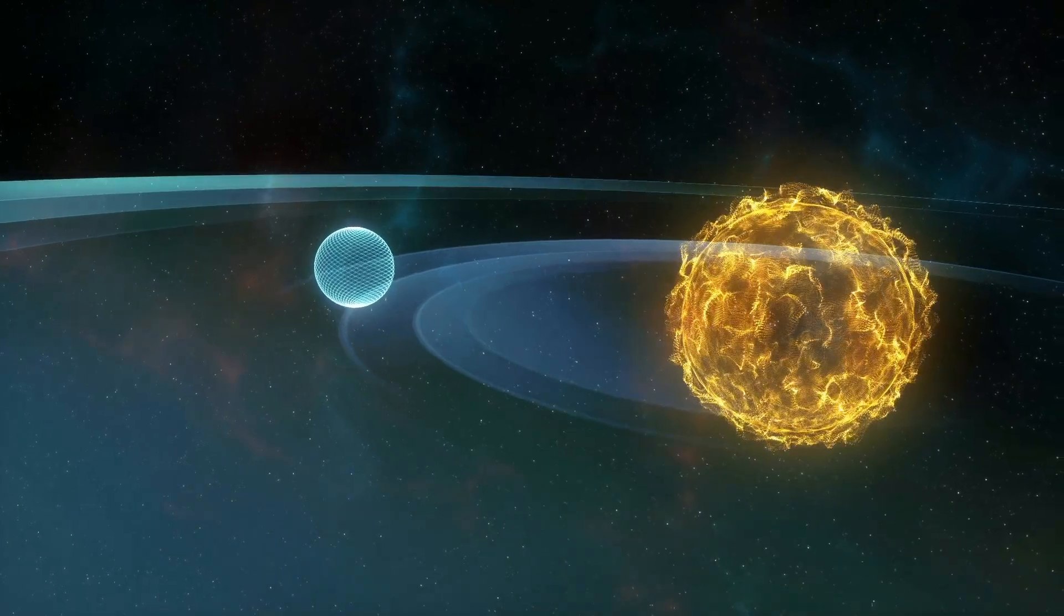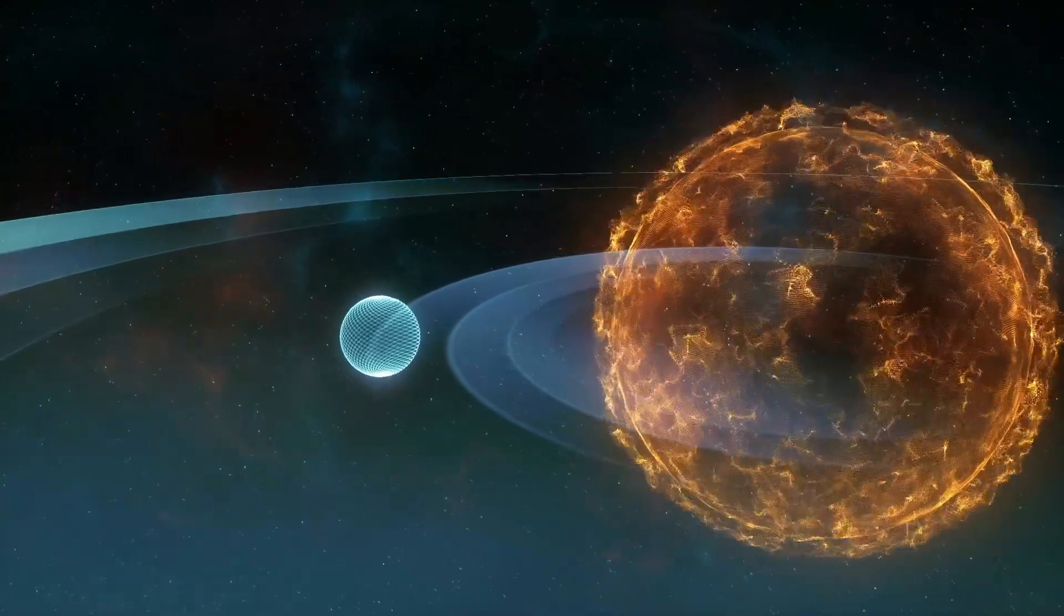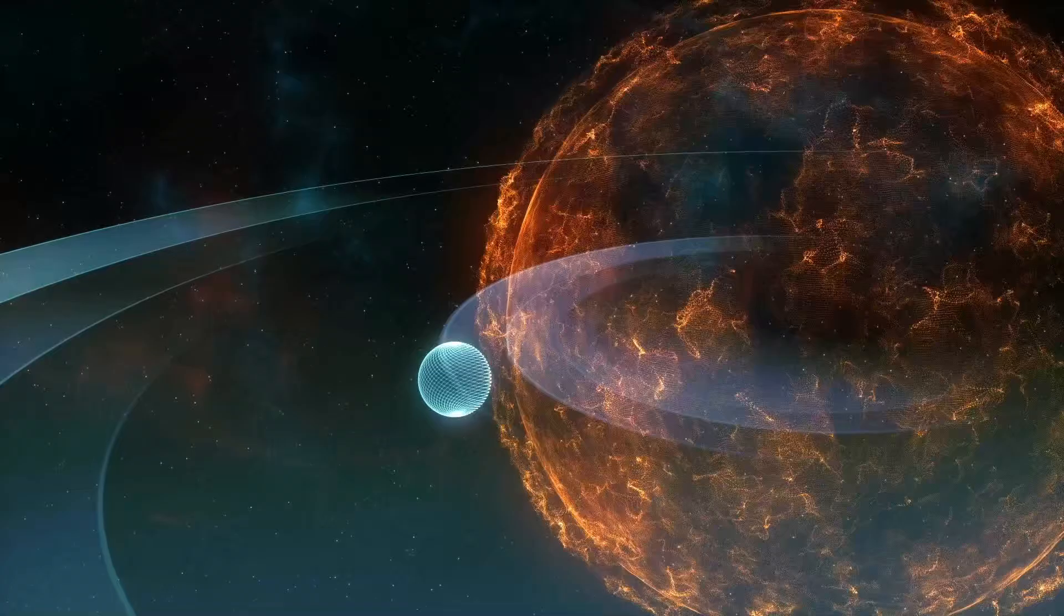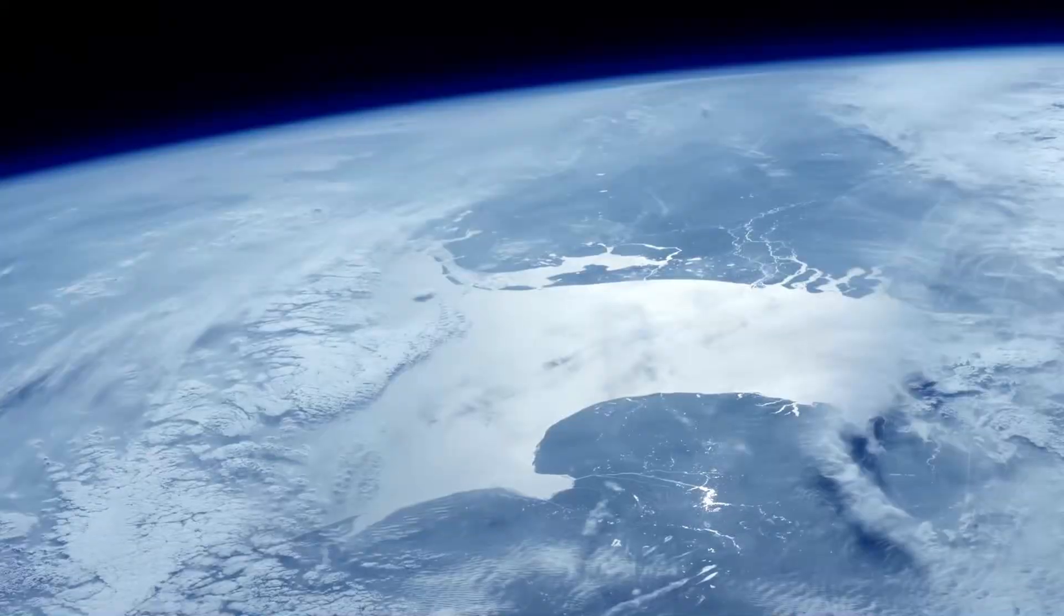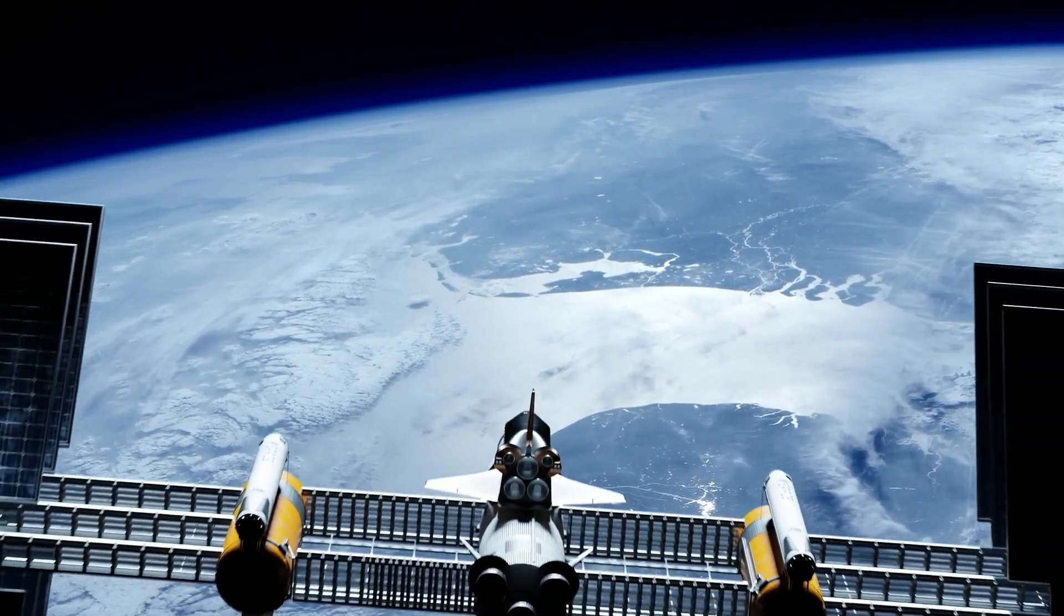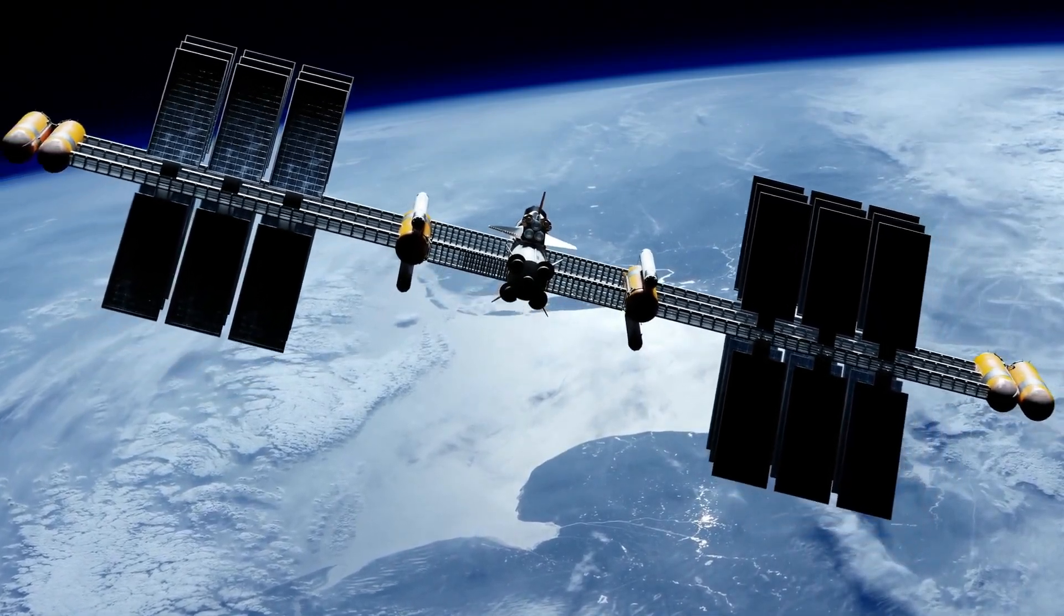As the sun transforms into a red giant, it will heat up to the point where Earth loses its atmosphere and water envelope, eventually being entirely engulfed by the sun. By that time, we may have to relocate to the outskirts of the solar system and witness the great galactic collision.